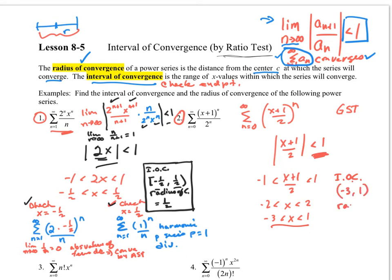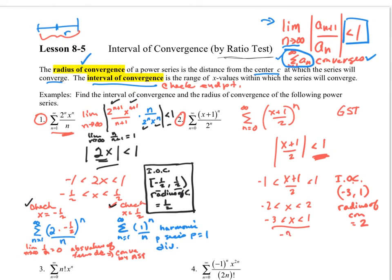The radius of convergence is an interval of 2. An easy way to compute it: take the difference of the two endpoints — negative 3 minus 1 — all divided by 2. That gives you the radius of convergence. So take your two endpoints, subtract them to find the overall length, then divide by 2 to get the radius.